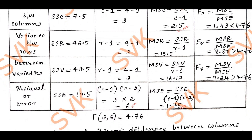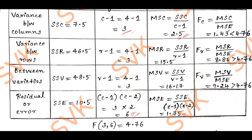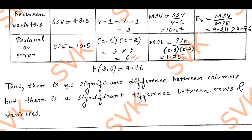According to the F table at degrees of freedom (3, 6), the critical value is 4.76. Comparing calculated values: FC is less than 4.76, but FR and FV are greater than 4.76. Therefore FR and FV lead to rejection of the null hypothesis, while FC is accepted. Thus, there is no significant difference between columns, but there is a significant difference between rows and varieties.